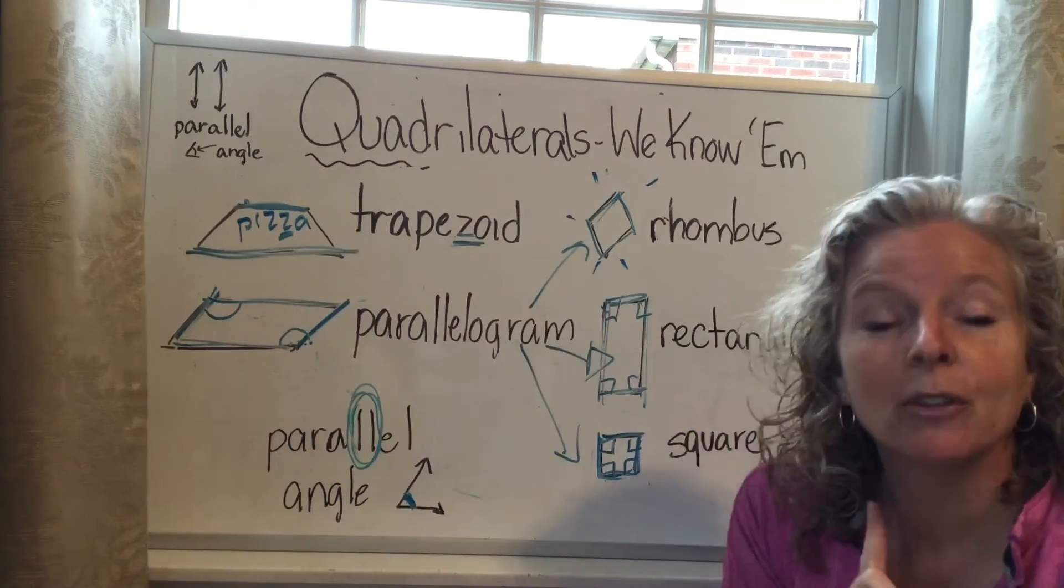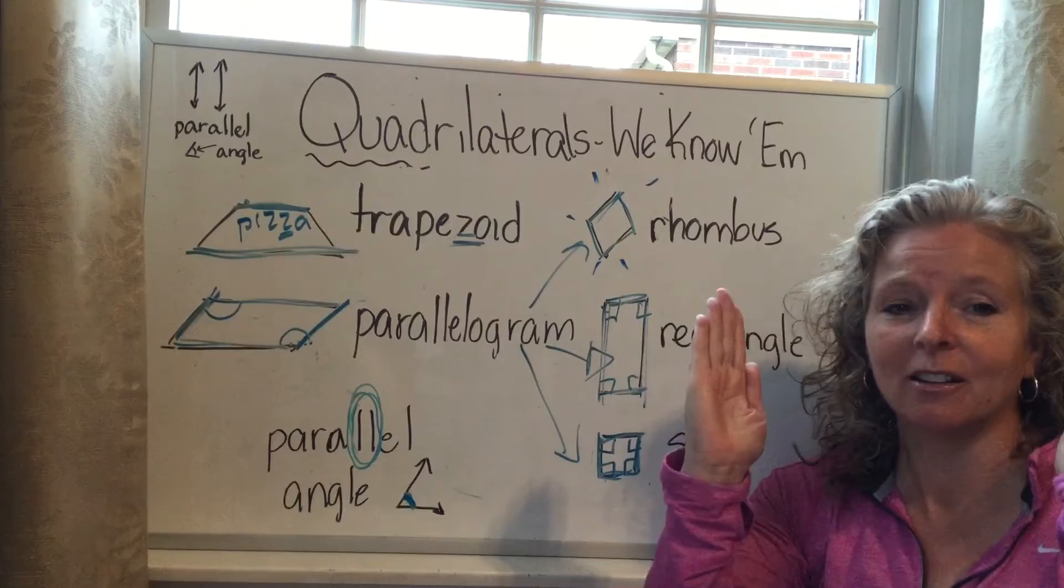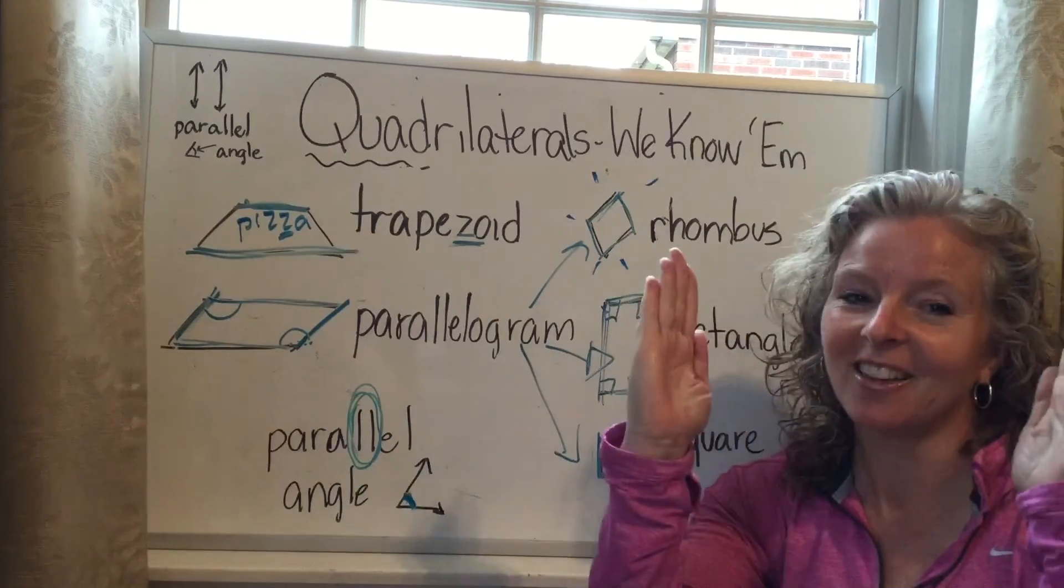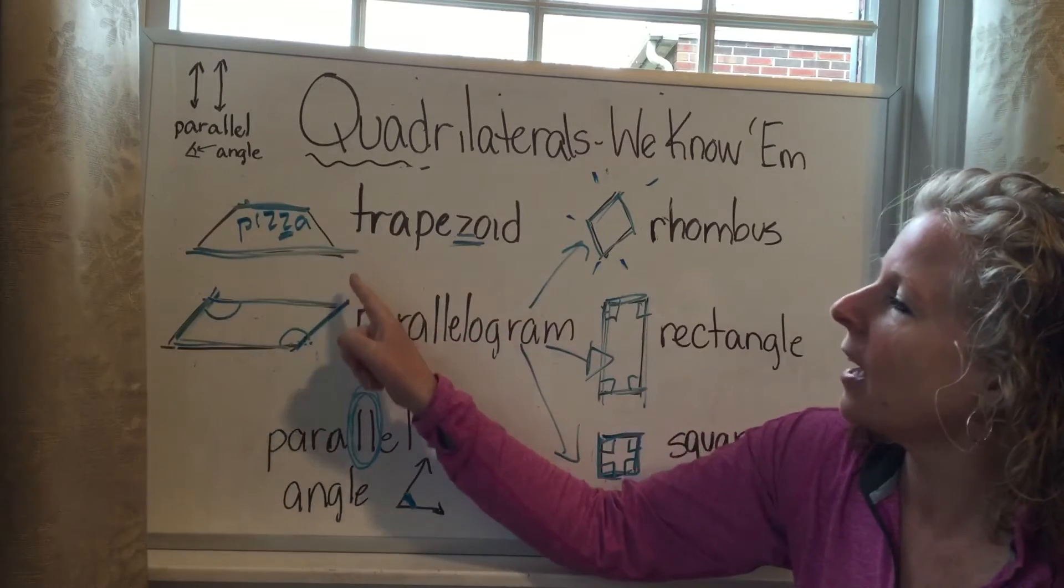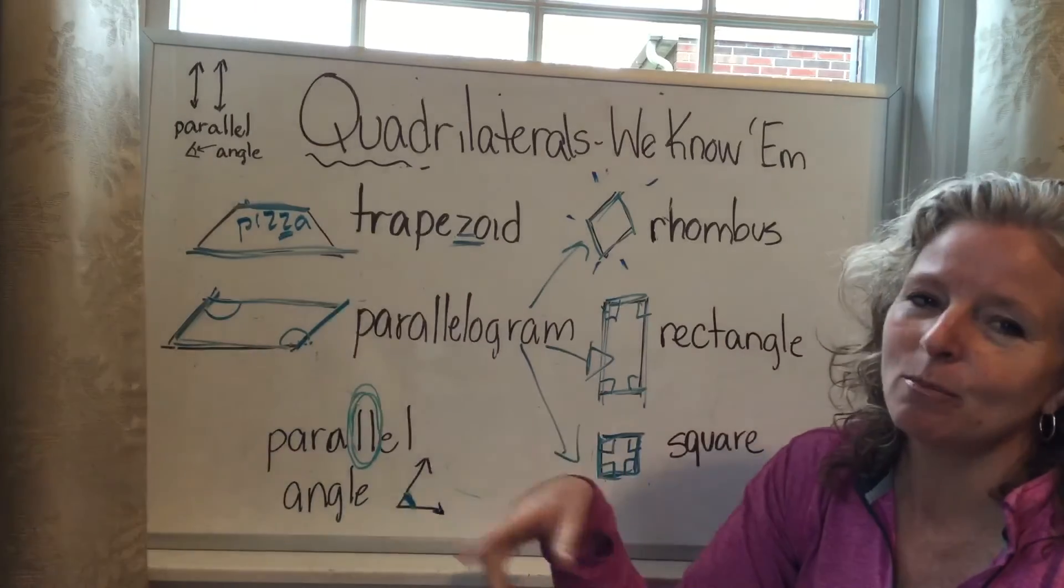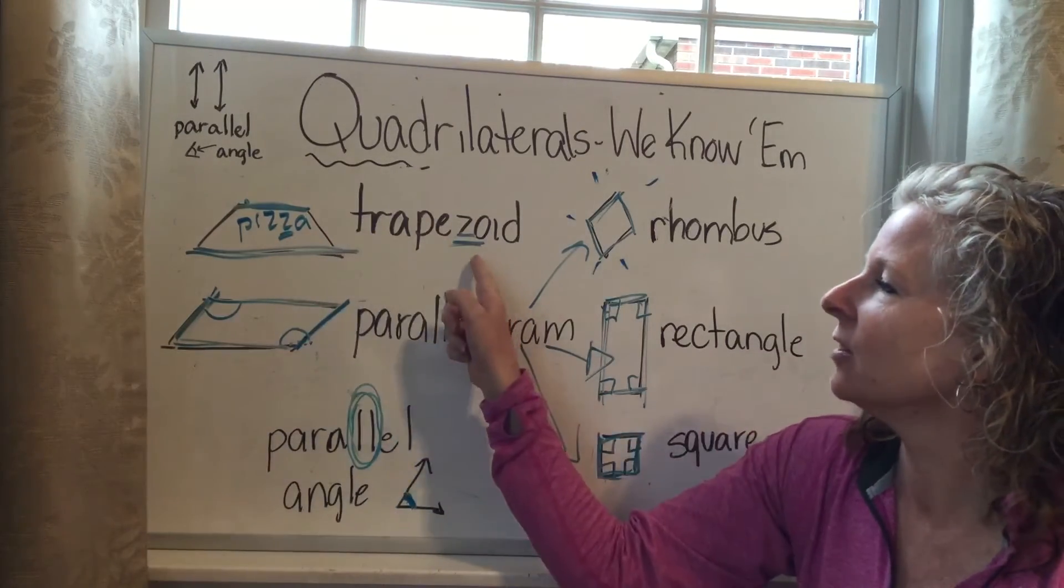Try it again. Trapezoids have just one set of parallel sides. Trapezoids have just one set of parallel sides. One set of parallel sides looks like the roof of Pizza Hut. Remember, because they both have the letter Z.